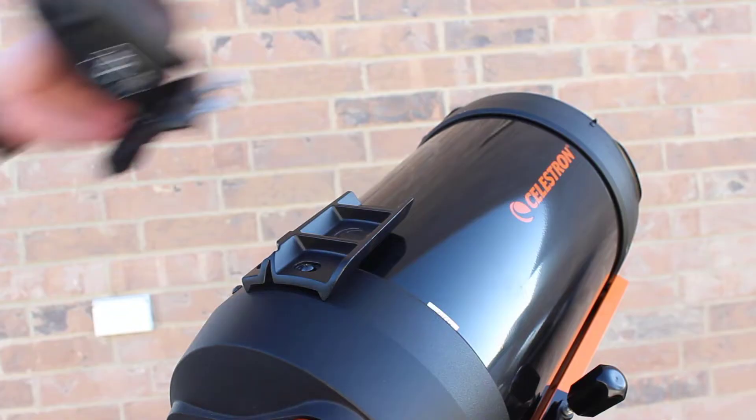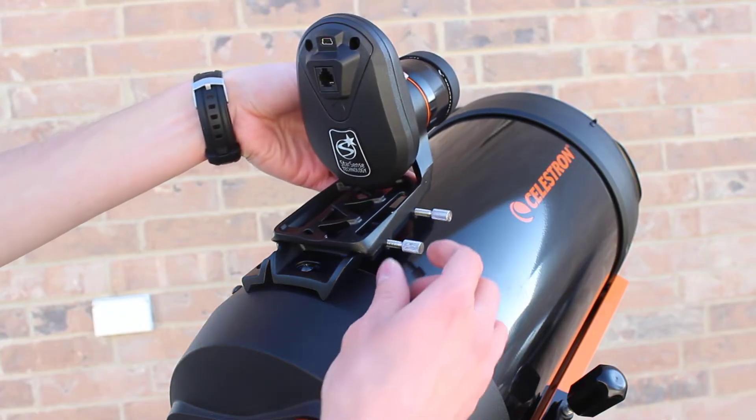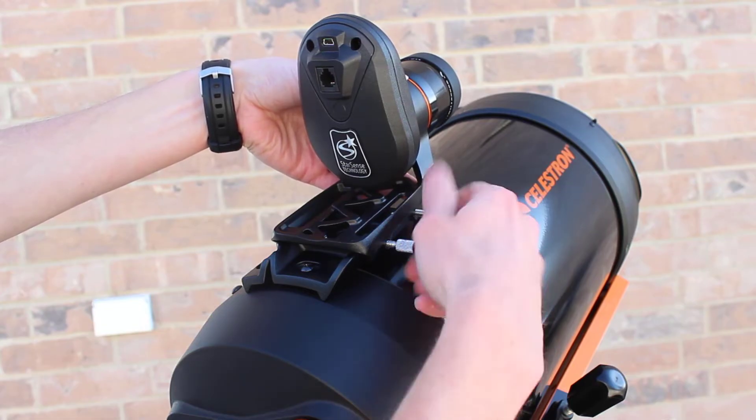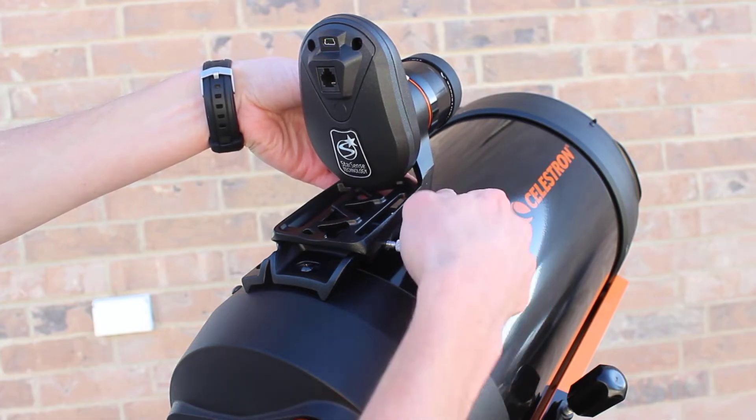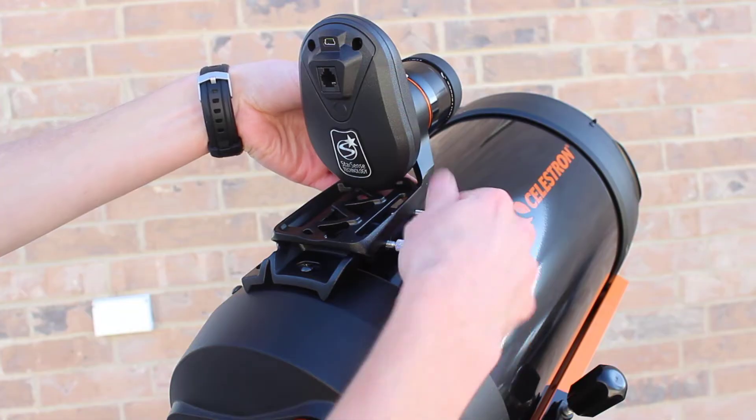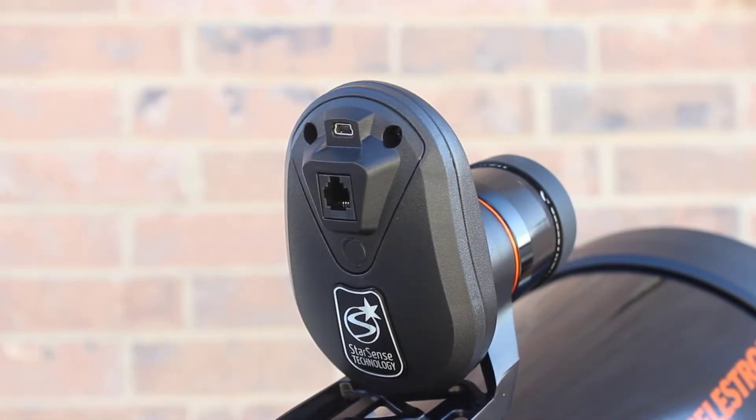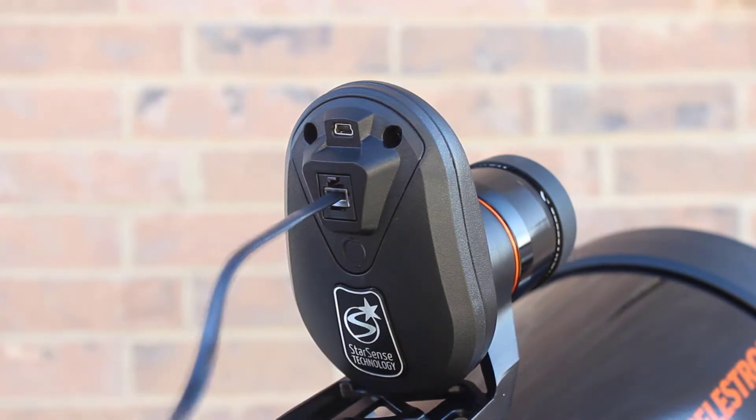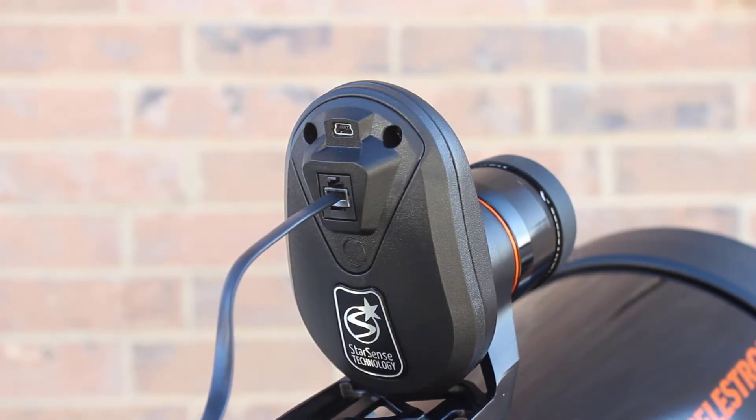Now we just simply slip the StarSense over the bracket and tighten down the thumbscrews. Once you have the StarSense on the telescope that you want it on, simply just plug in your auxiliary cable to the StarSense and to the auxiliary port on your mount.